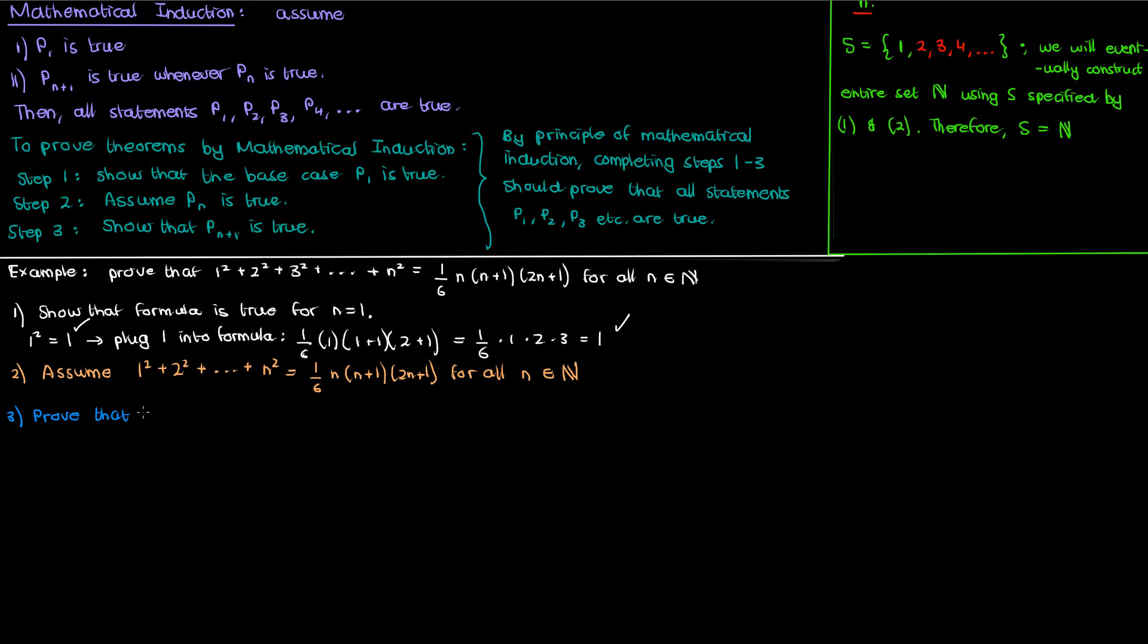The second step is to assume that the formula is true for a natural number N. And the third step is to prove that the N plus 1 case is therefore true. That is, we have to show that this formula is true when we consider the sum of the squares of natural numbers until N plus 1 and use N plus 1 in our formula accordingly. If we use N plus 1 in our formula, this is the equation we must prove. If we look at the left hand side, then according to the assumption in step 2, every term before the N plus 1 squared term comes together and sums to 1 over 6 times N times N plus 1 times 2N plus 1. So that means we're just adding 1 over 6 times N times N plus 1 times 2N plus 1 to N plus 1 whole squared, which I can expand to N squared plus 2N plus 1. So that's the left hand side dealt with.